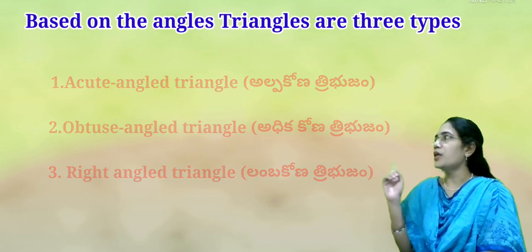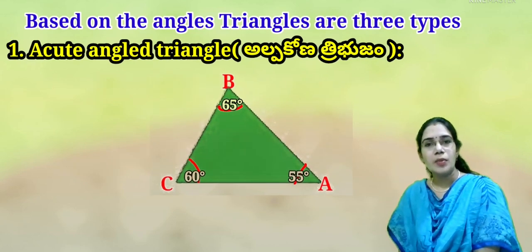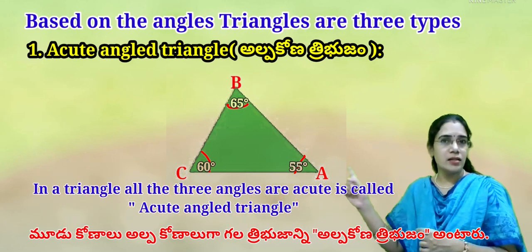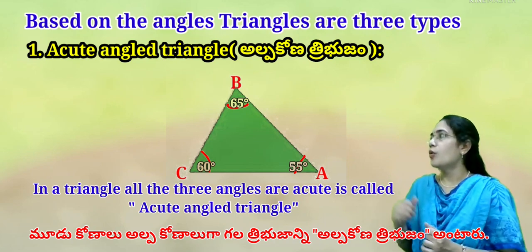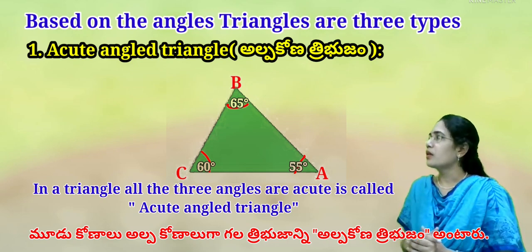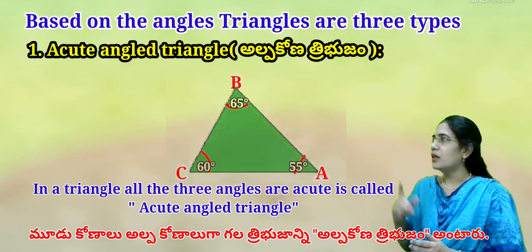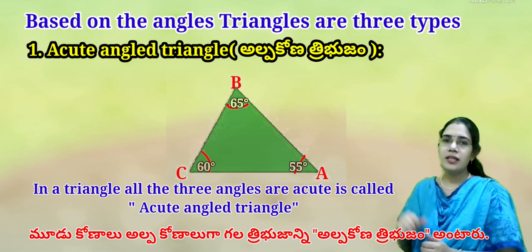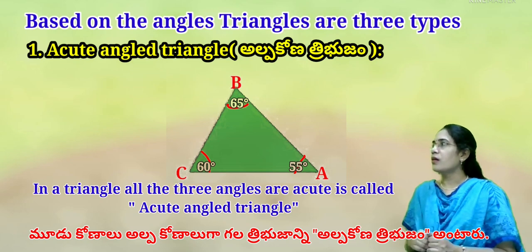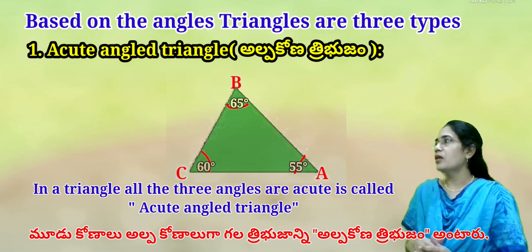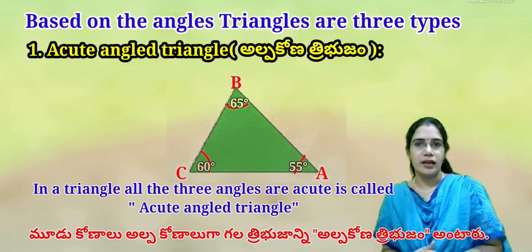The first type is the acute angle triangle (Alpa Kona Thribujamu). In this triangle, all three angles are acute — that is, below 90 degrees. Here we observe Angle A = 55°, Angle B = 65°, Angle C = 60°. All three angles are below 90 degrees, so this is an acute angle triangle.